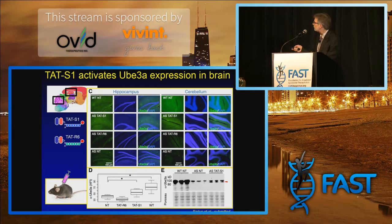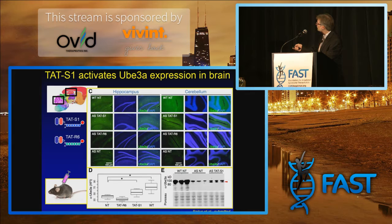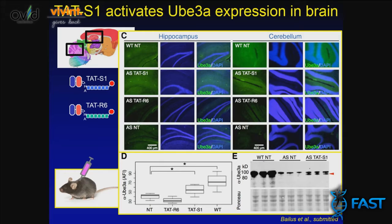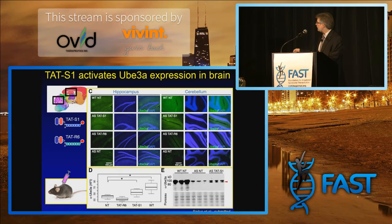I'm cutting right to the end here to show data where we can inject this into the mouse — not directly into the brain, but into the body of the mouse. It's able to cross the blood-brain barrier, enter the neurons in the brain. Here I'm showing UBE3A expression in green — hippocampus and cerebellum sections from a wild-type mouse expressing UBE3A, the Angelman syndrome mouse not expressing UBE3A, and then when we put in our therapeutic protein, we can see that the levels are turned on, kind of more like wild-type. But if we put in a protein that's just a little bit different in its DNA-binding domain, you don't see the UBE3A coming on.